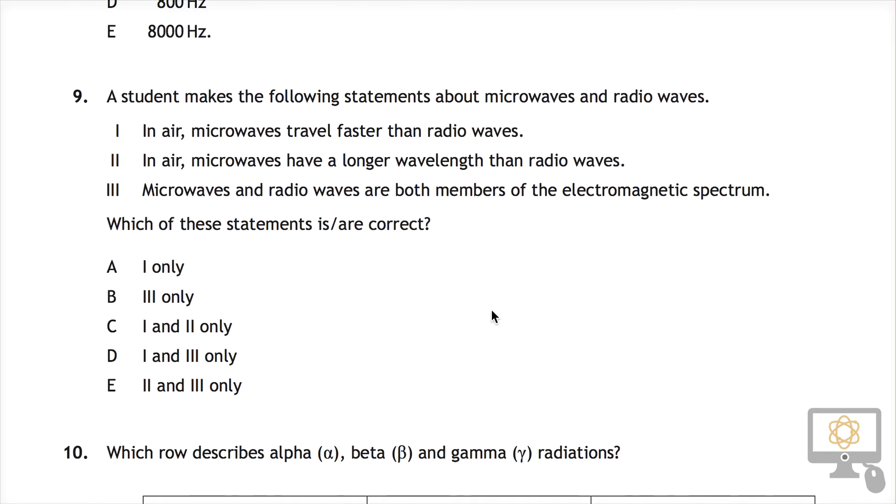It says in air, microwaves travel faster than radio waves. In air, microwaves have a longer wavelength than radio waves. And part 3, microwaves and radio waves are both members of the electromagnetic spectrum. So let's think about the ones that we think for sure are true.